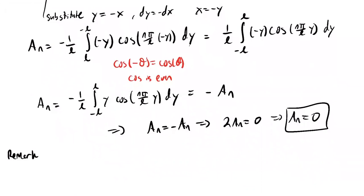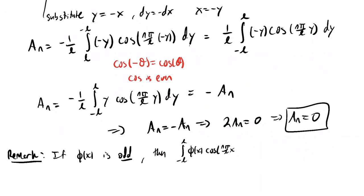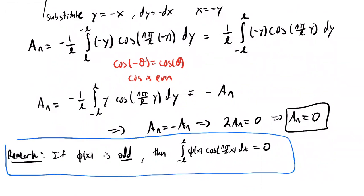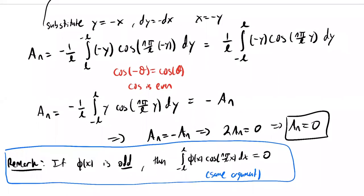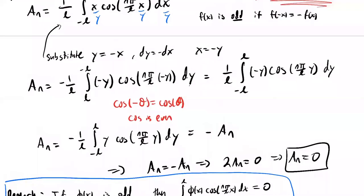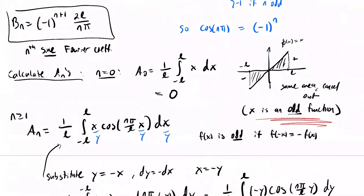So we've shown a_n = minus a_n, which implies 2a_n = 0, so a_n = 0. We did this without using the fundamental theorem of calculus — just a clever substitution exploiting the symmetry that phi is odd and cosine is even. This shows a useful general result: if phi(x) is an odd function, then the integral from minus L to L of phi(x) times cosine(nπ/L · x) dx equals zero.